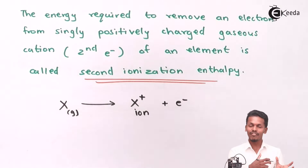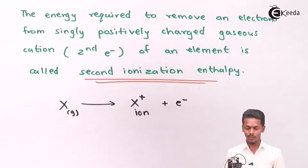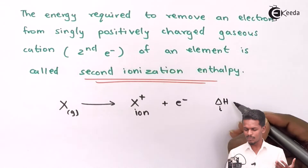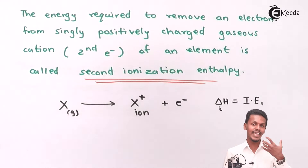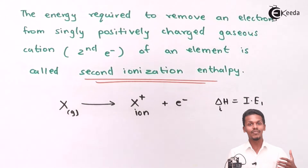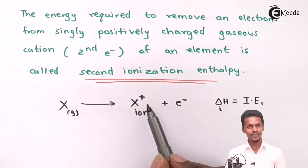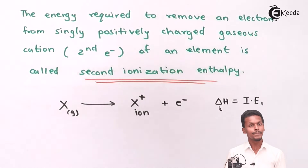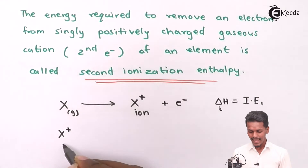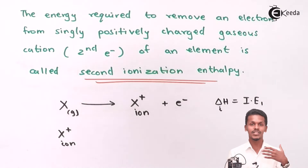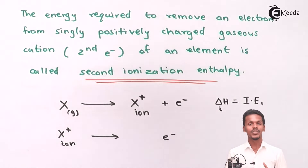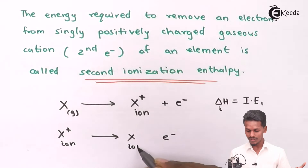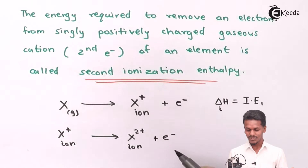The first electron we removed from the atom corresponds to the first ionization enthalpy, represented as ΔH = IE₁. To remove the second electron, we do not start again with the neutral atom. Instead, we abstract one more electron from the X⁺ ion — the singly charged cation — converting it into X²⁺, which now carries two positive charges.